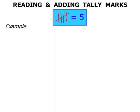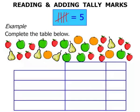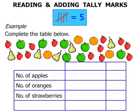Let's look at an example. We're asked to complete the table below. There are lots of pieces of fruit, and the table has columns for the number of apples, number of oranges, number of strawberries, and number of pears. We're going to have a tally column, and then finally a column that indicates the total.